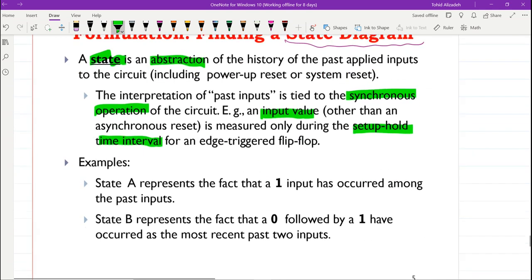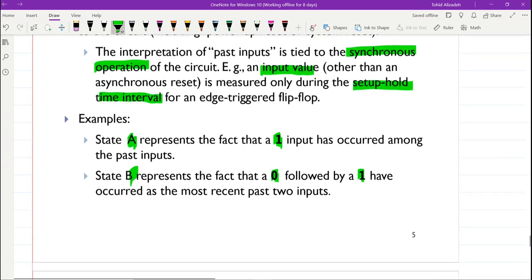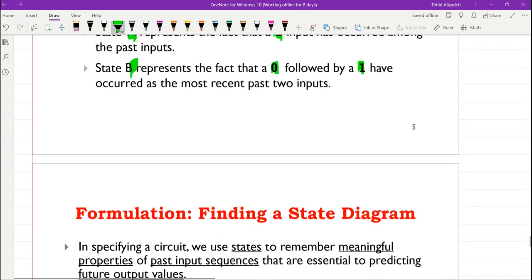As an example of the state, we can have state A representing the fact that a 1 input has occurred among the past inputs. Or we can have another state B which represents the fact that a 0 followed by a 1 have occurred as the most recent past two inputs. We will see examples of the states later, so don't worry about it for now.